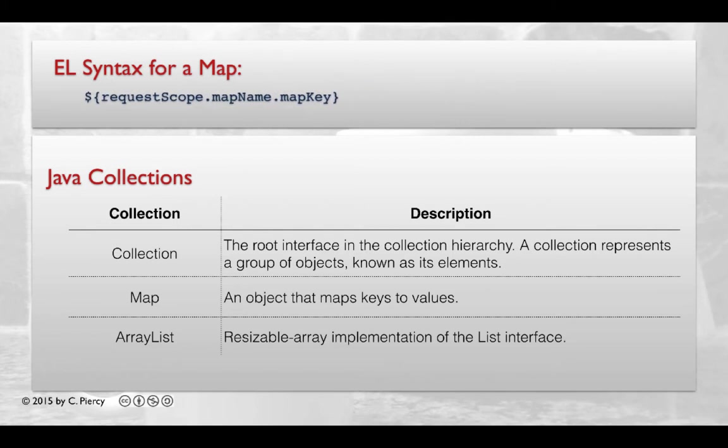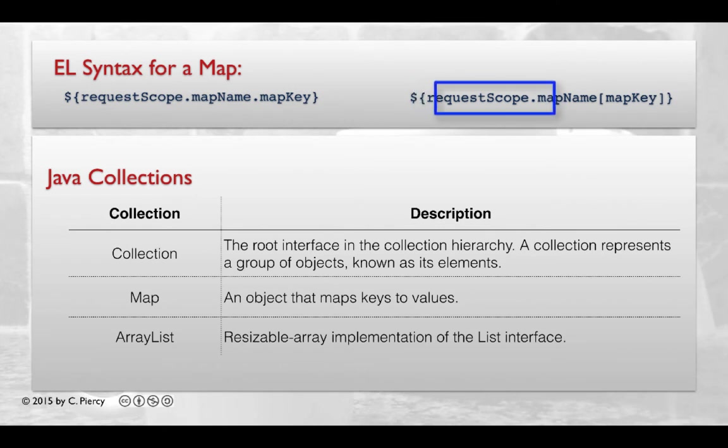Alternatively, you could use this notation. These are both equivalent. The explicit scope, if needed. The map name.